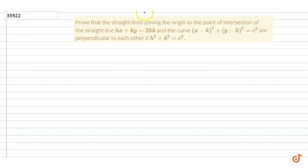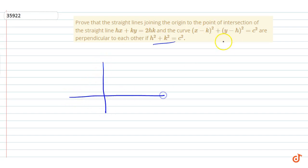This question asks us to prove that the straight lines joining the origin to the point of intersection of a given straight line and a given curve are perpendicular to each other. We have a straight line and a curve — this curve is a circle with center C.